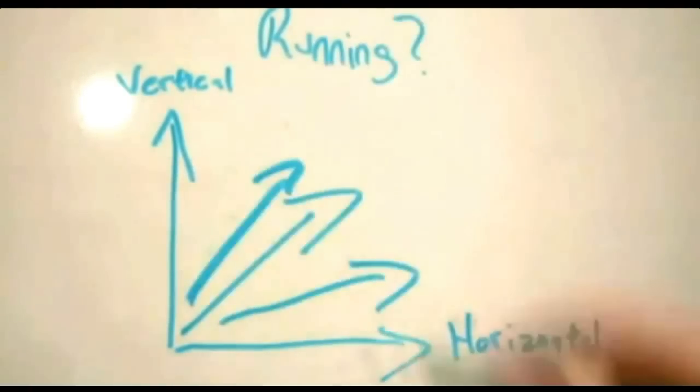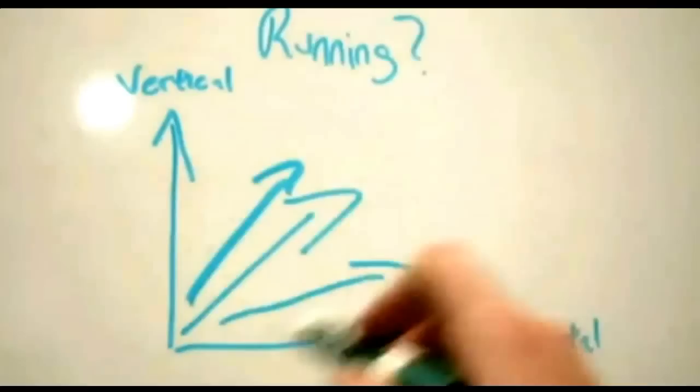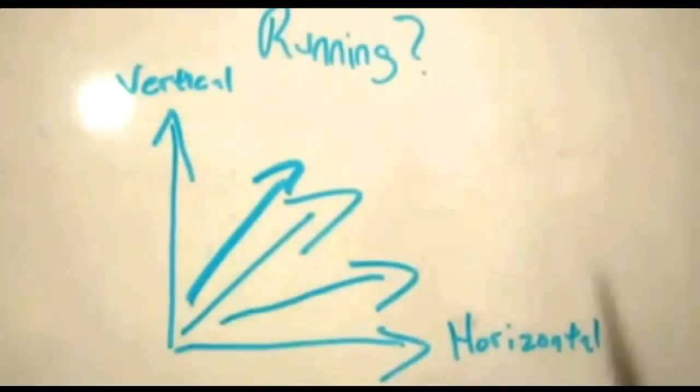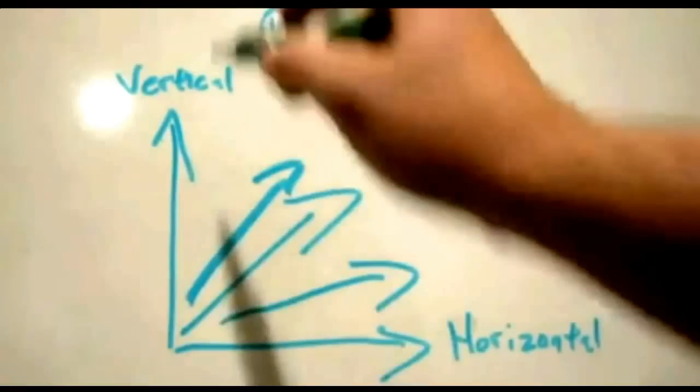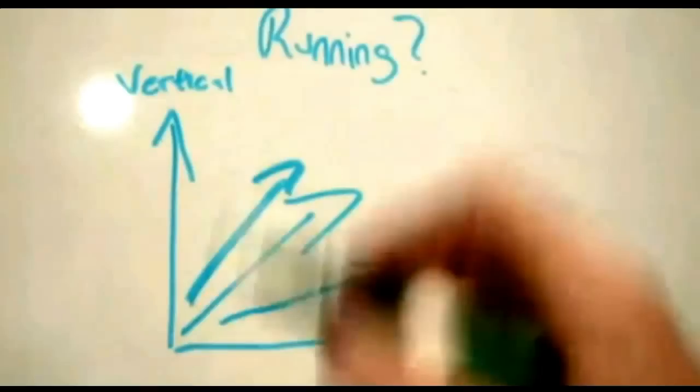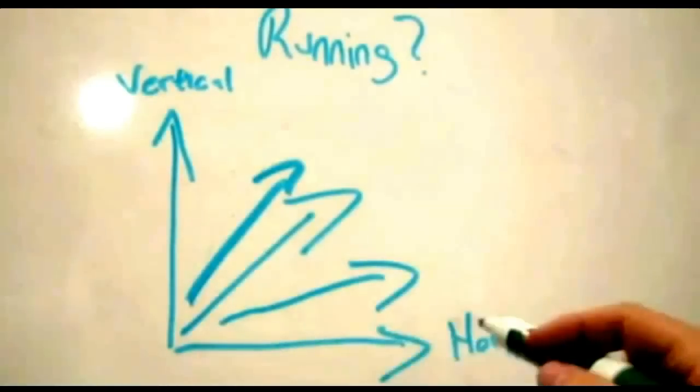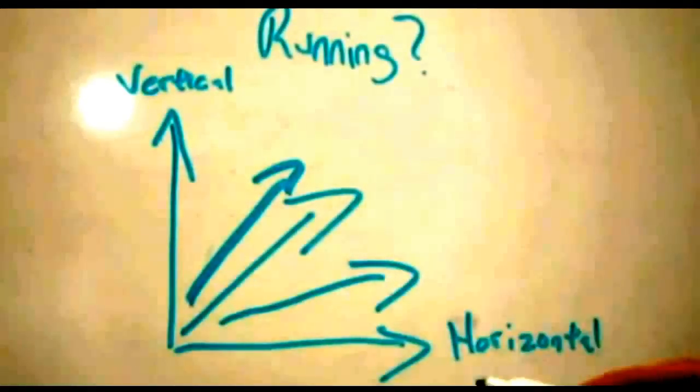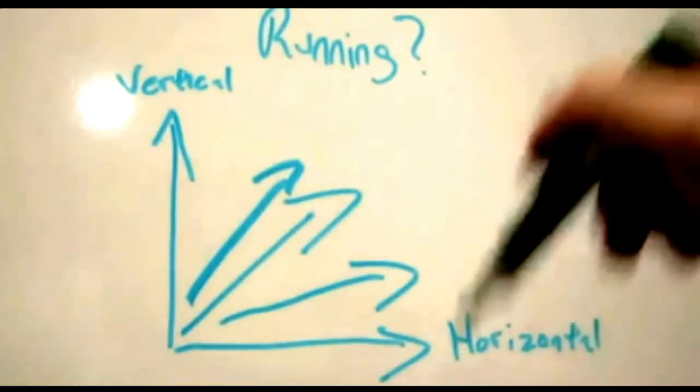But to be honest with you, you need to train both. Otherwise, you do not move forward. If force was completely vertical, you would just be jumping straight up and down, you wouldn't go fast. And if the force was completely horizontal while you were running, your body would just keep getting lower and lower and you would buckle.